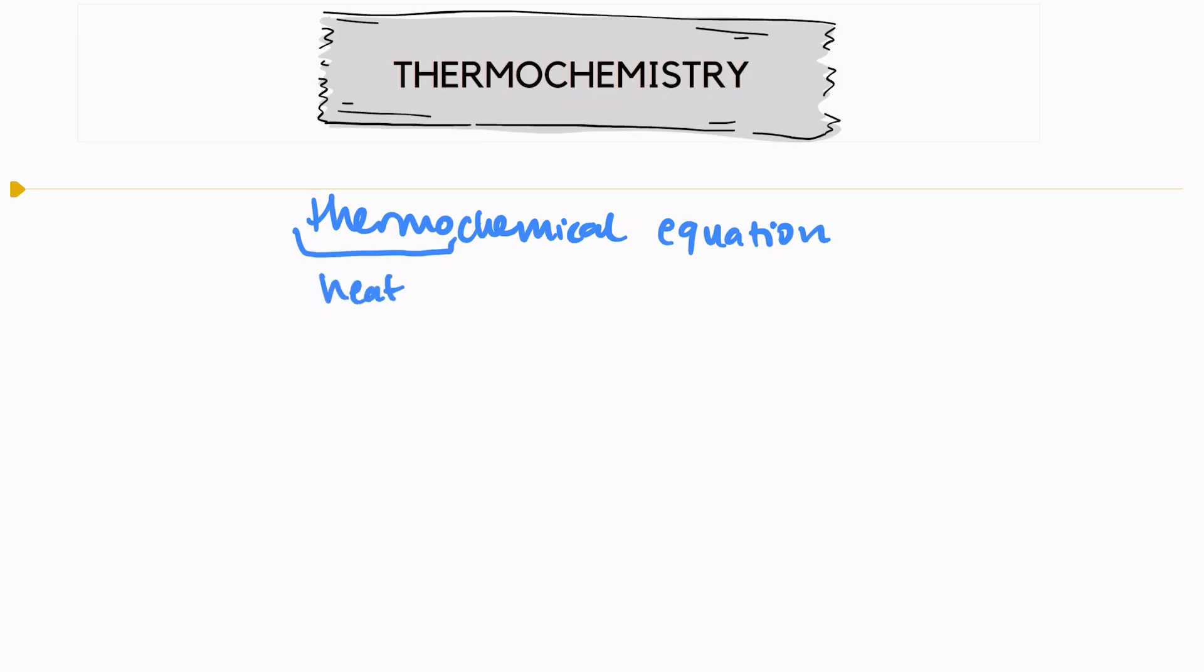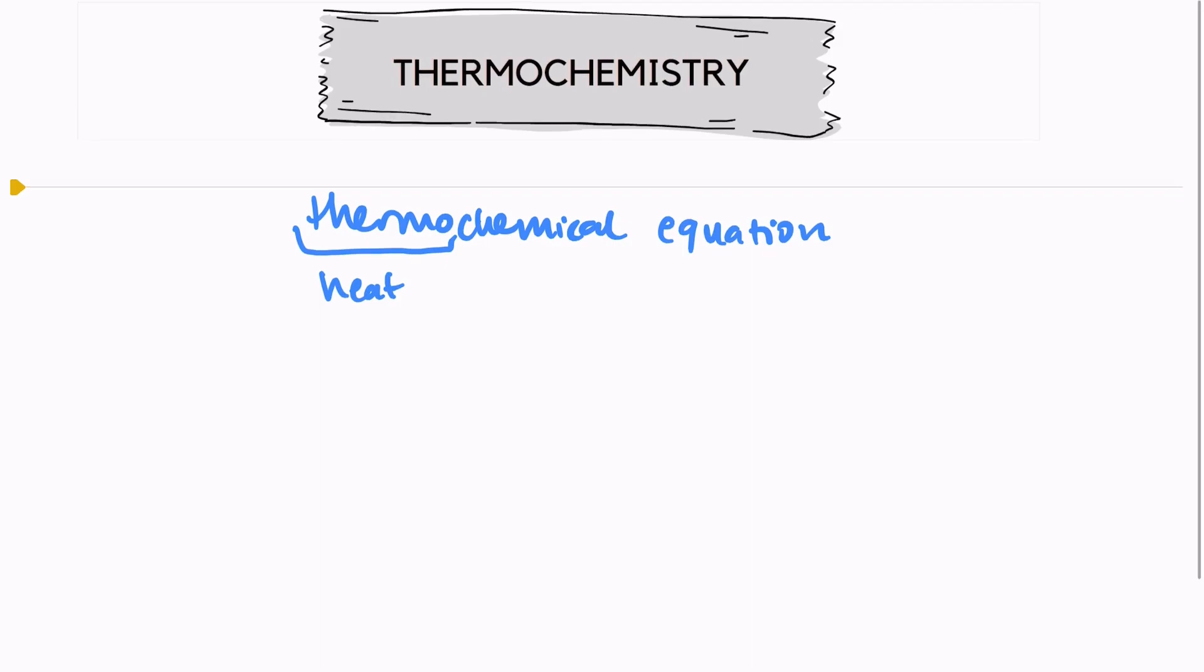When we're looking at a thermochemical equation, we're looking at a chemical equation that includes the heat change that occurs during the reaction. Thermochemical equations do not only have to be chemical changes, they can also be physical changes as well. So thermochemical equations can show chemical changes or physical changes with the heat change that occurs during these changes.